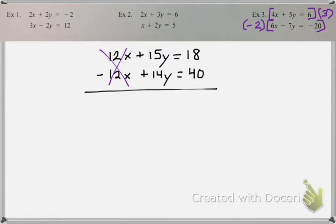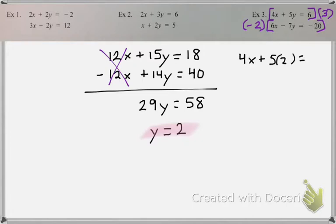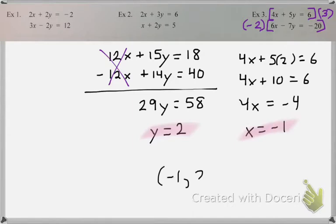Now, all I need to do is finish solving. I get 29y equals 58. If I divide both sides by 29, I get y equals 2. And then, let's substitute that into our first equation. So, 4x plus 5 times 2 equals 6. Subtract 10 from both sides and divide both sides by 4. So, x equals negative 1. I have negative 1, 2.